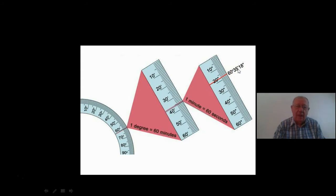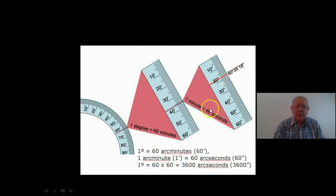Here's a summary of what we're saying: one degree equals 60 arc minutes, and there's the symbol. One arc minute is 60 arc seconds, and that means of course that one degree is equal to 3,600 arc seconds.